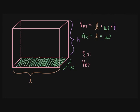So the volume of a rectangular prism can be represented as the length times the width times the height, or equivalently, the area of its base times its height.